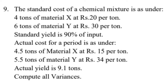The standard cost of a chemical mixture is as follows: 4 tons of material X at rupees 20 per ton, and 6 tons of material Y at rupees 30 per ton. Standard yield is 90 percent of input. Actual cost for a period is: 4.5 tons of material X at rupees 15 per ton, and 5.5 tons of material Y at rupees 34 per ton. Actual yield is 9.1 ton. We need to calculate material price variance, material mix variance, material yield variance, material usage variance, and material cost variance.